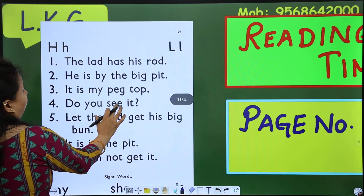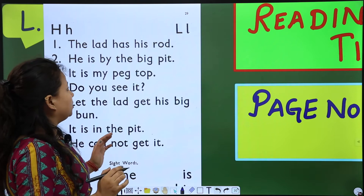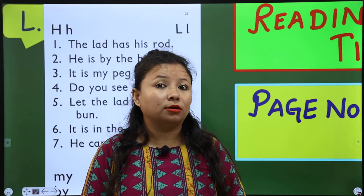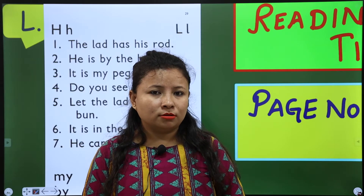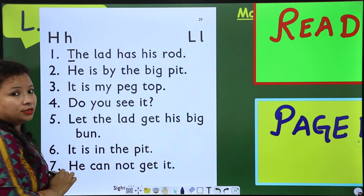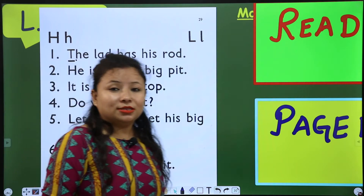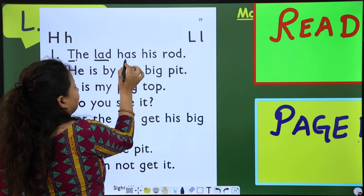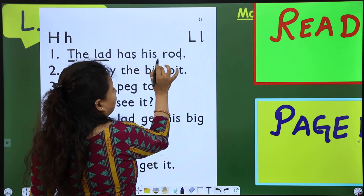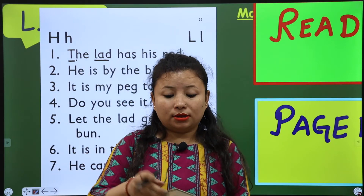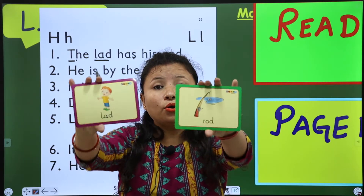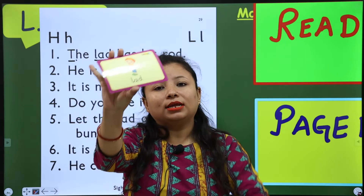Now look here. There are so many words that you have read before. Let's open page number 29 and then we will take the test so you will learn whether you have read or not. Now, which word is this? This is: 'The lad has his rod.' This is 'lad' and this is 'rod'.